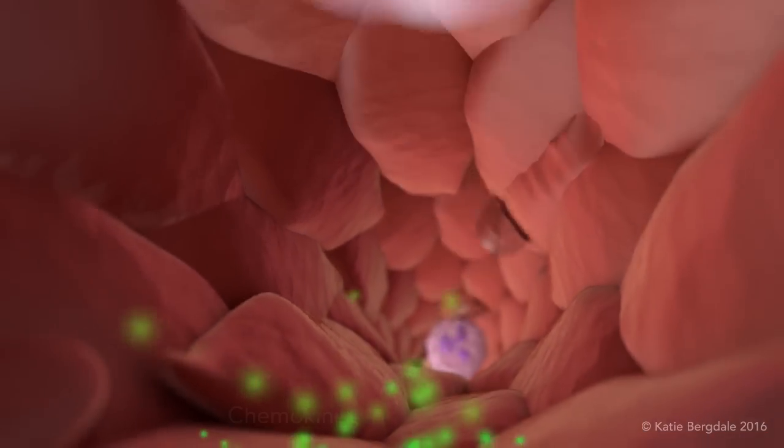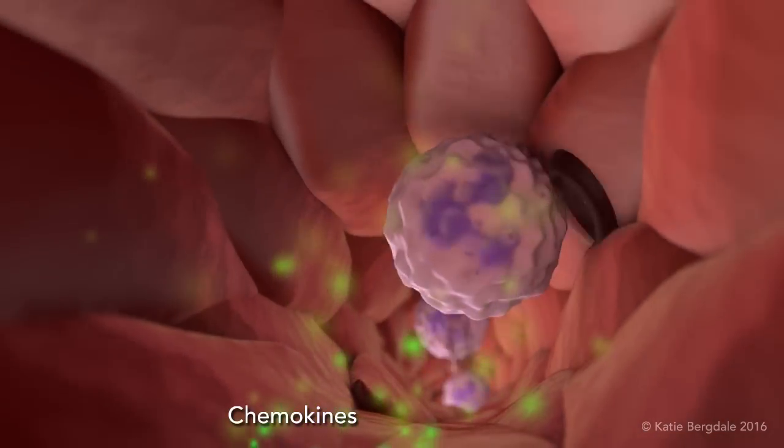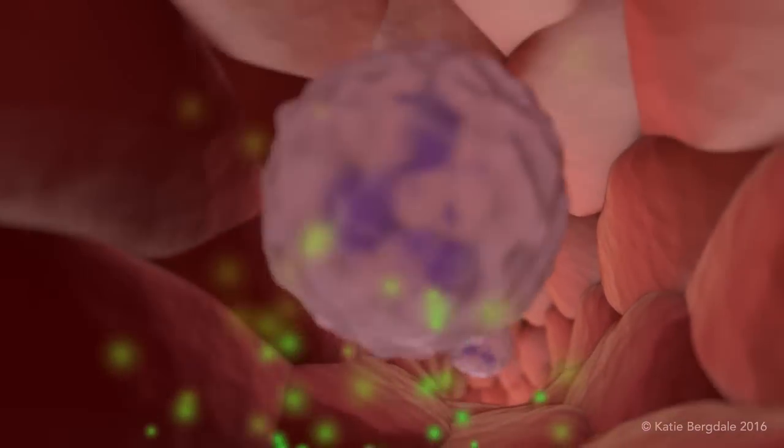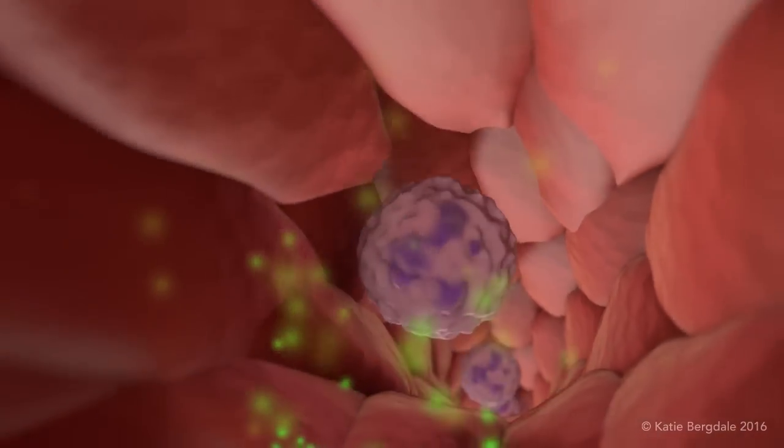Extravasation begins when chemokines are released by immune cells at a site of injury or inflammation, activating the endothelial cells of nearby capillaries to express adhesion molecules.